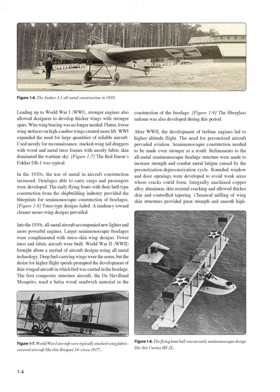Into the 1930s, all-metal aircraft accompanied new lighter and more powerful engines. Larger semi-monocoque fuselages were complemented with stressed-skin wing designs. Fewer truss and fabric aircraft were built. World War II brought about a myriad of aircraft designs using all-metal technology. Deep fuel-carrying wings were the norm, but the desire for higher flight speeds prompted the development of thin-winged aircraft in which fuel was carried in the fuselage. The first composite structure aircraft, the de Havilland Mosquito, used a balsa wood sandwich material in the construction of the fuselage. The fiberglass radome was also developed during this period.